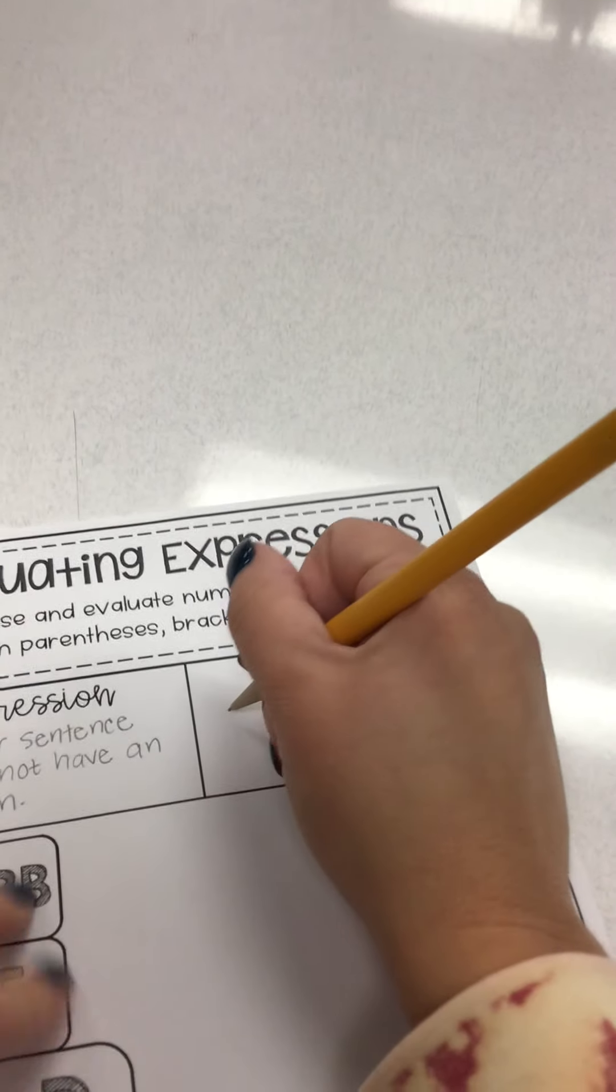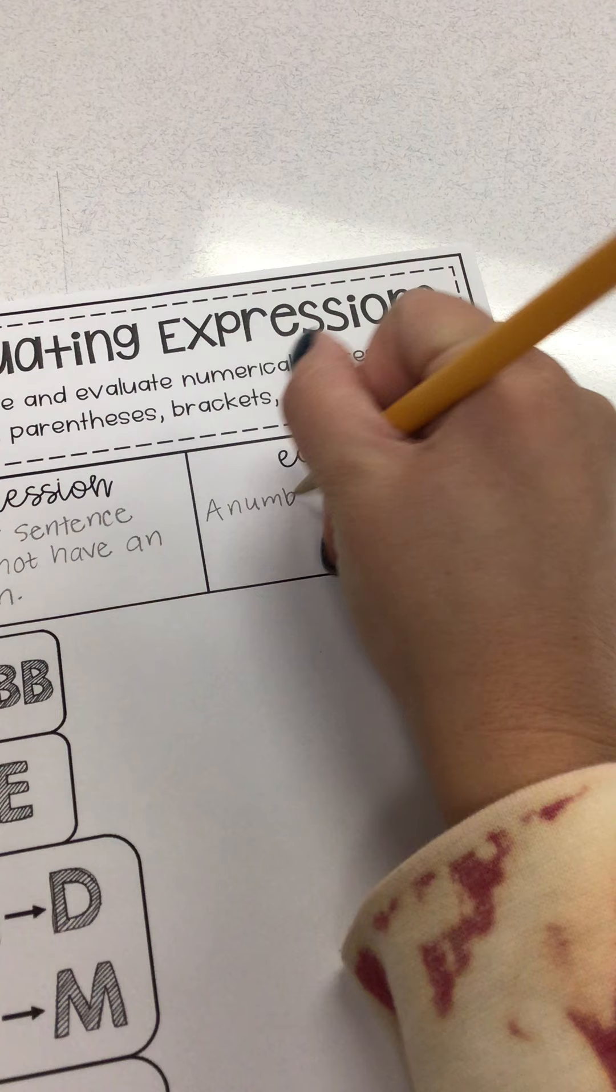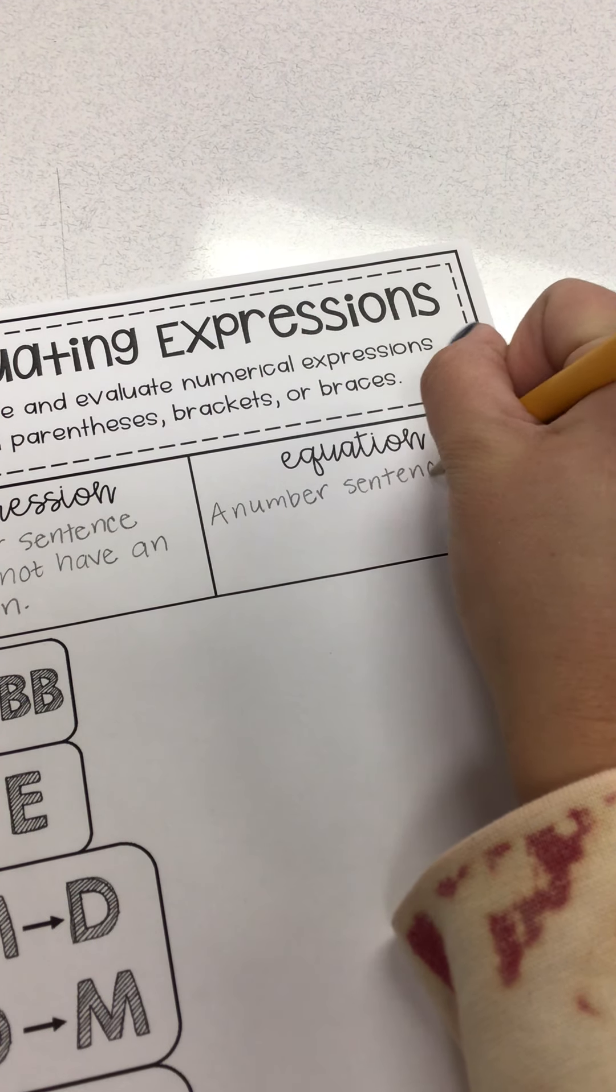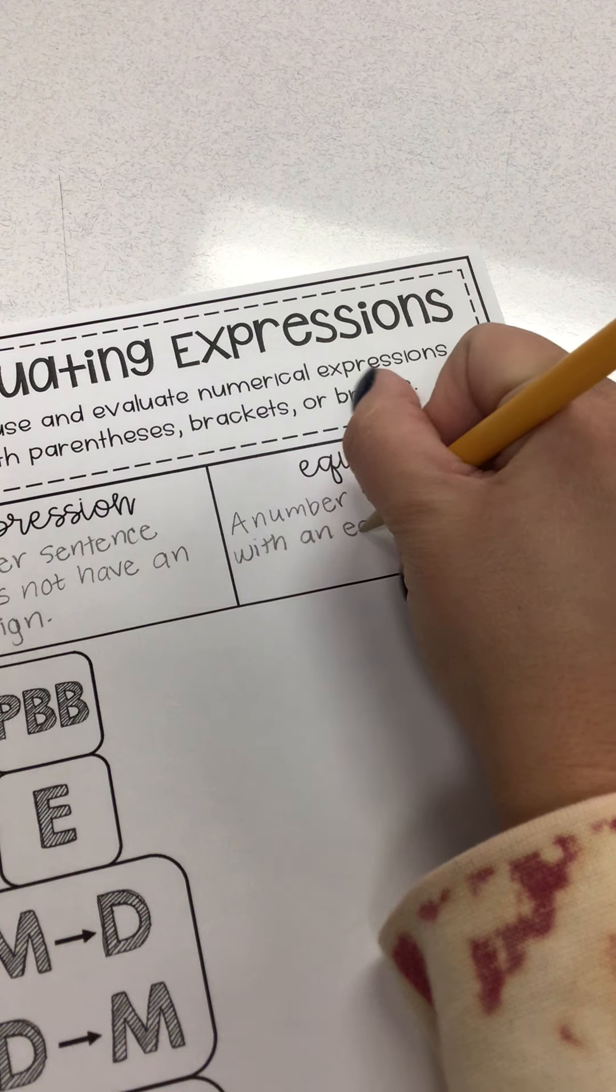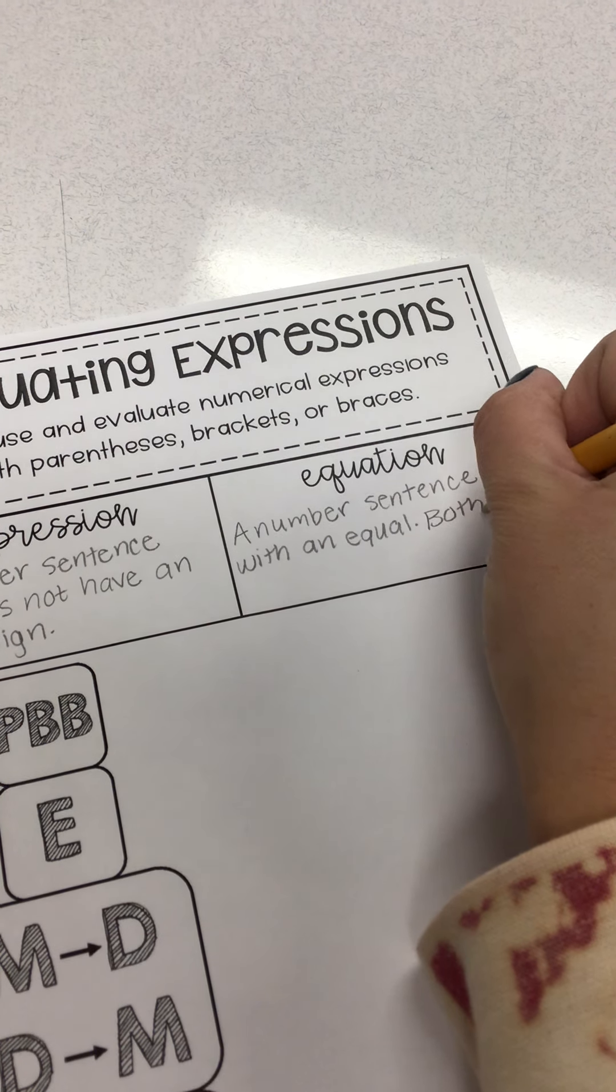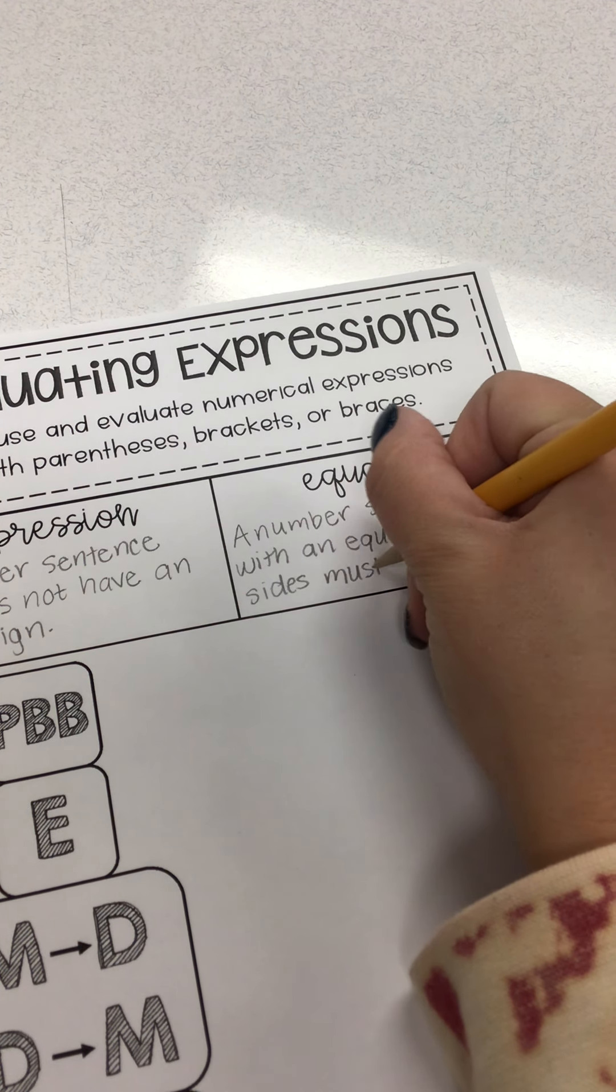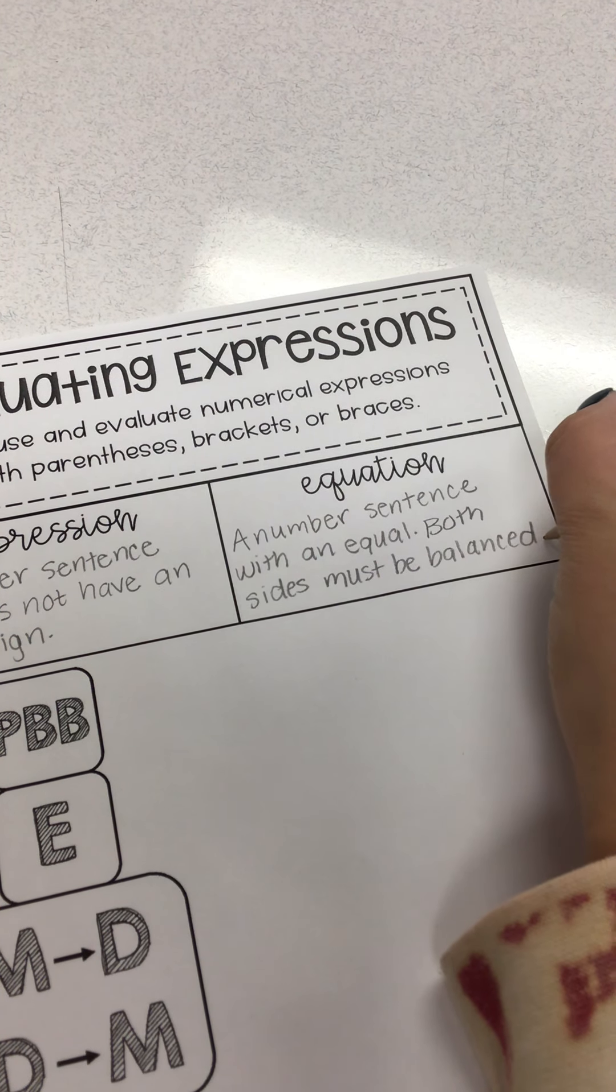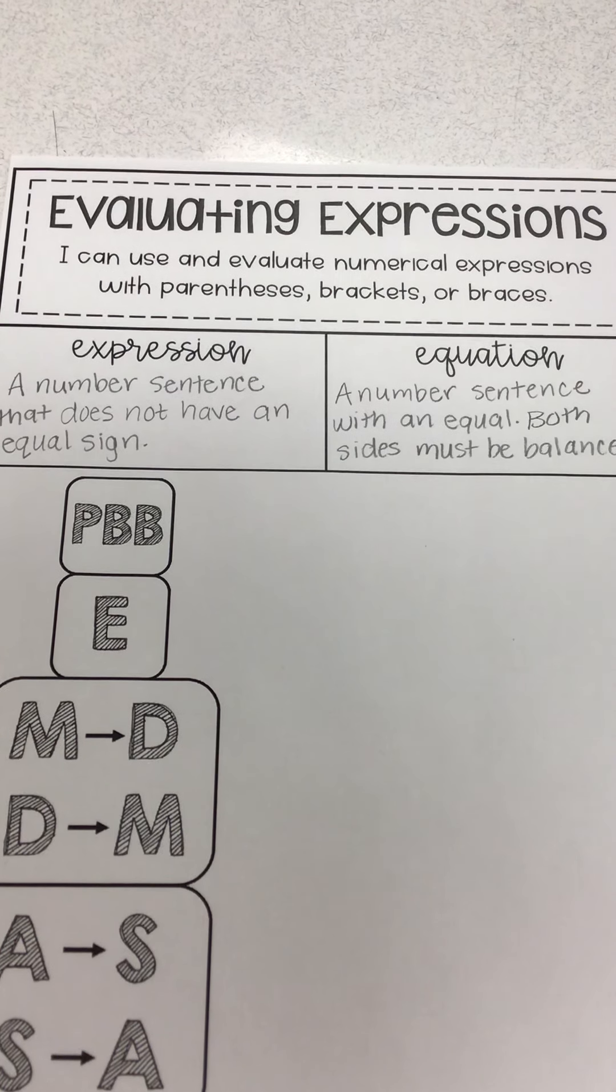An equation is a number sentence with an equal sign, and both sides must be balanced. So they have to equal the same amount on both sides. You should have those notes somewhere else in your notebook as well, but it's just a good reminder for you.